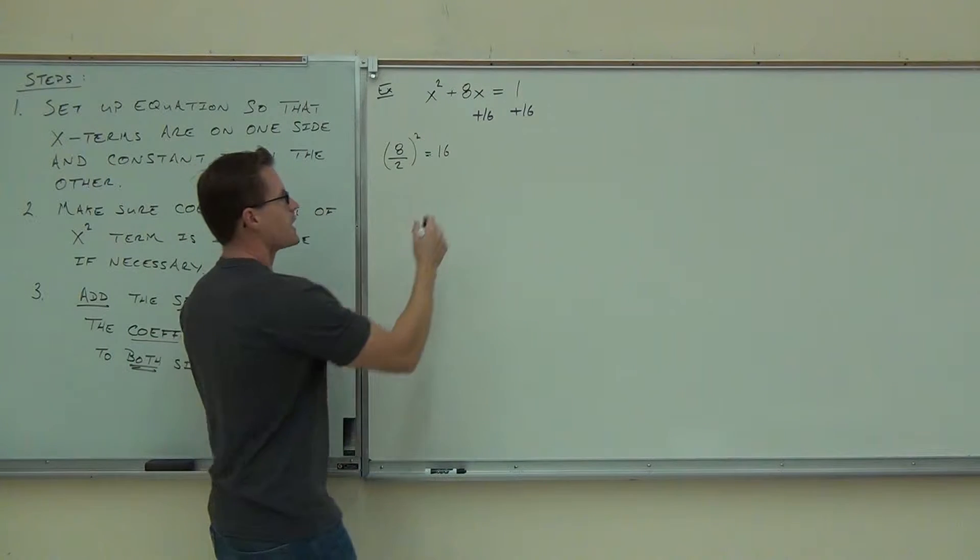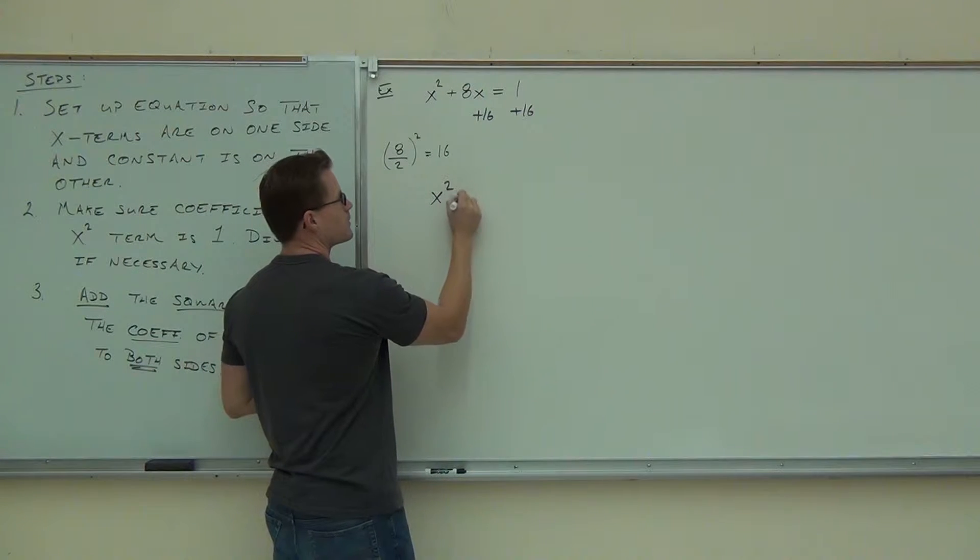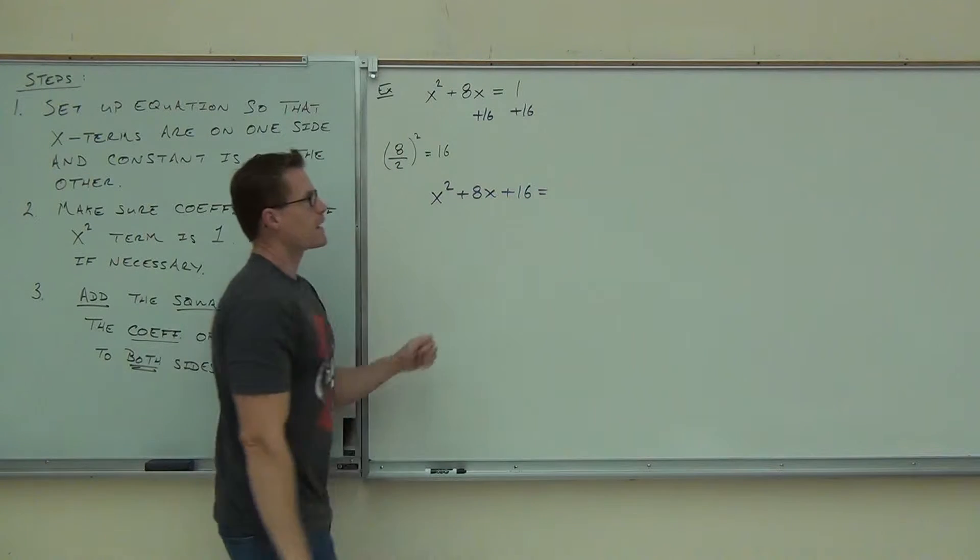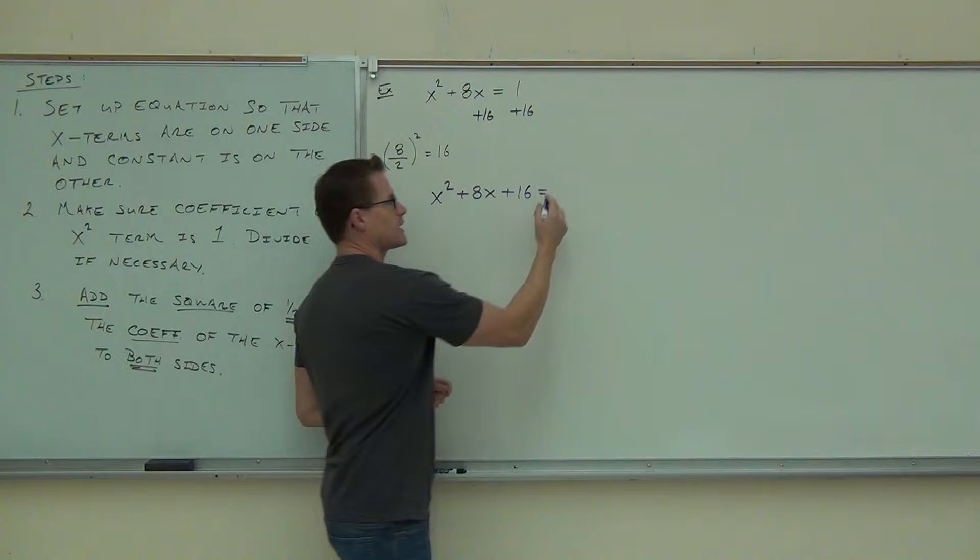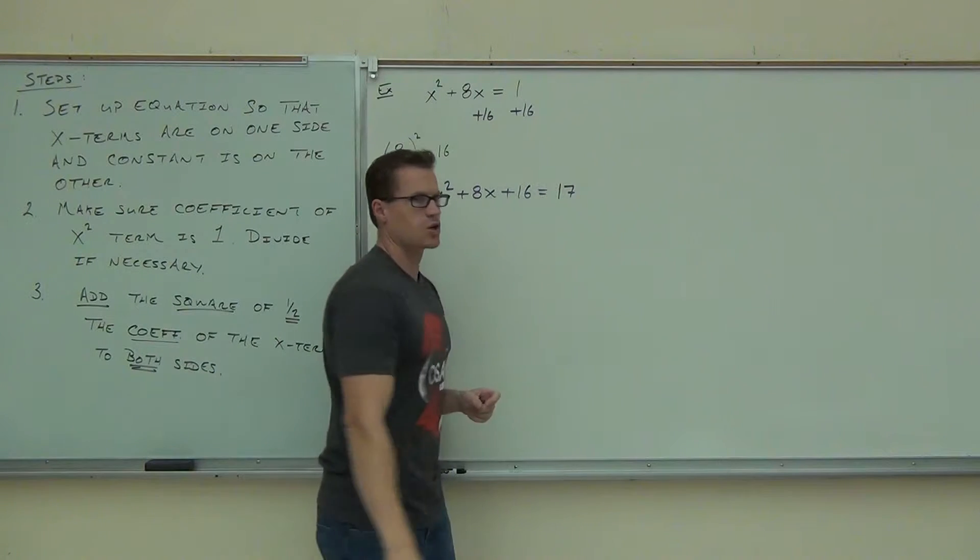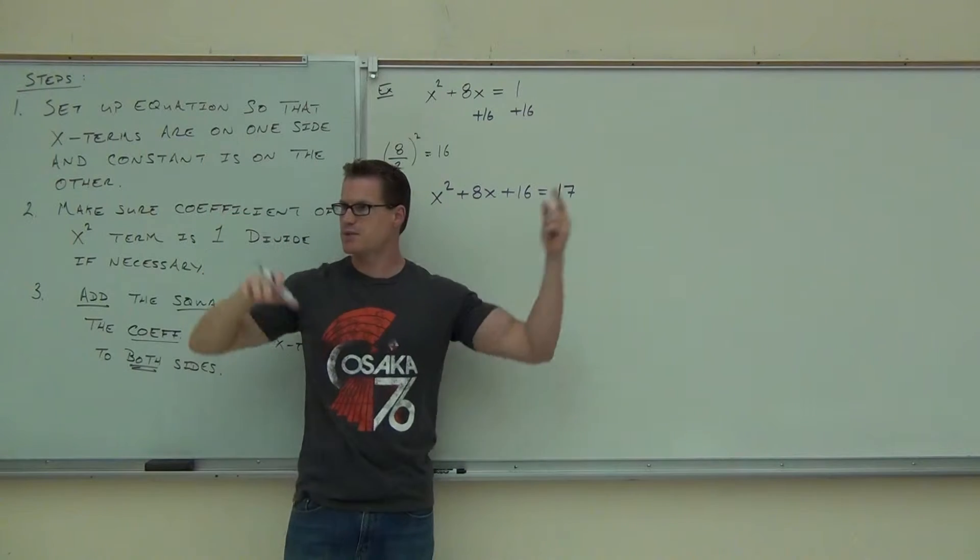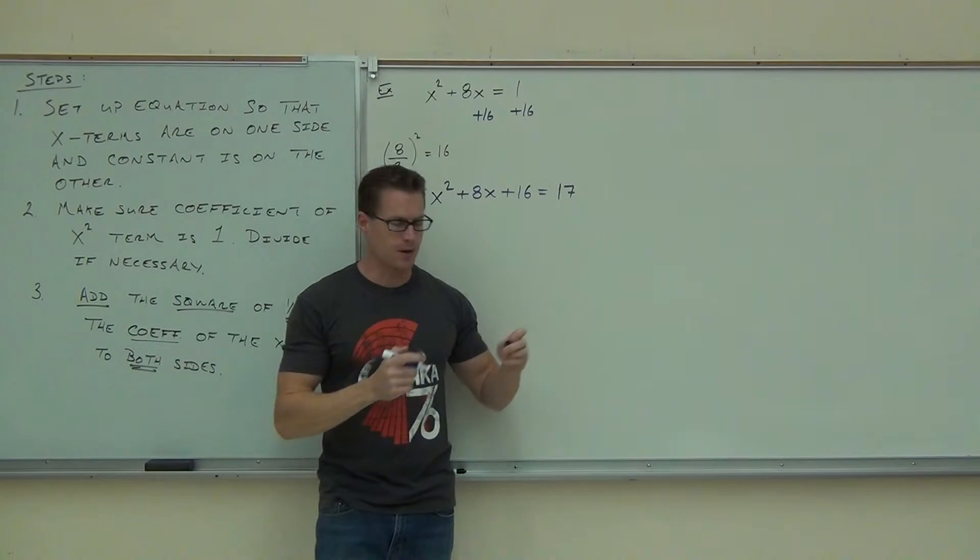On the left-hand side, this is how we got the x squared plus 8x plus 16. On the right-hand side, we do our 1 plus 16, that gives us 17. By show of hands, how do we feel okay getting that far? Can you follow the steps and see that these are our steps?